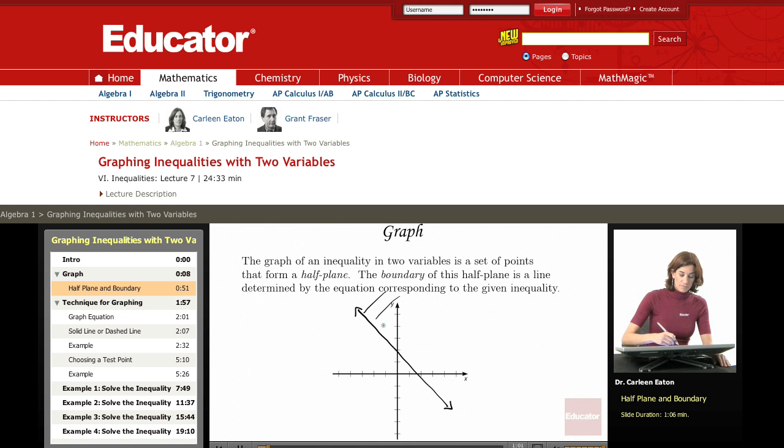Right here, and continuing on, would be the upper half plane. Below the line is the lower half plane. One of these half planes will contain the set of points that is going to be the solution for my inequality in two variables.